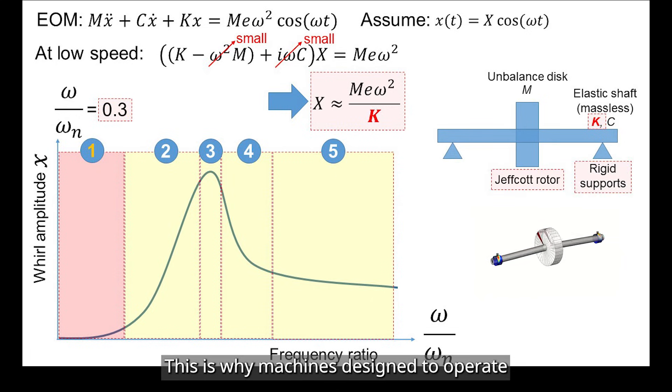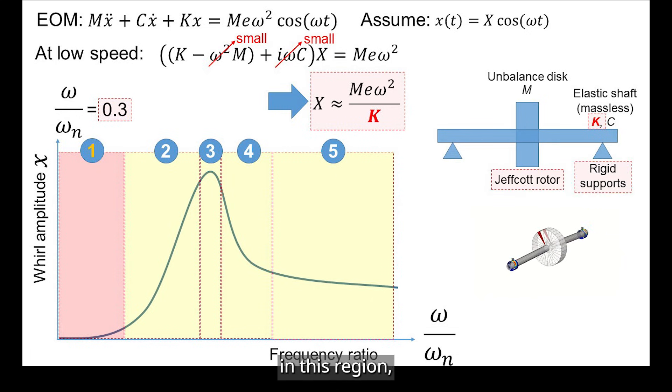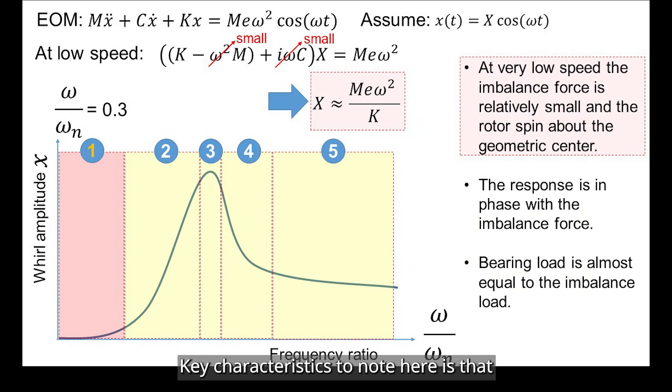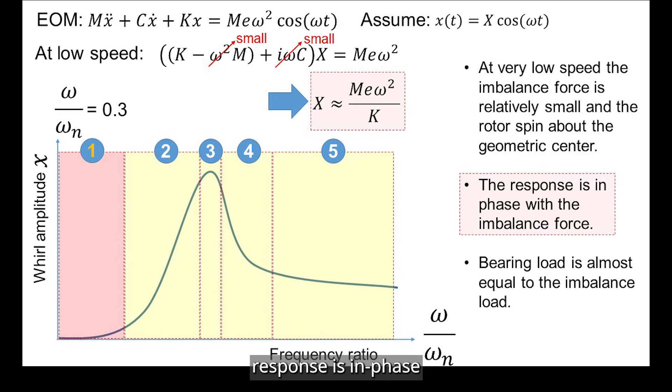This is why machines designed to operate in this region, like some low-speed fans and blowers, benefit from high-stiffness designs. Key characteristics to note here is that rotor spins about geometrical center, and rotor response is in phase with the imbalance force, and bearing load is almost equal to imbalance forces.